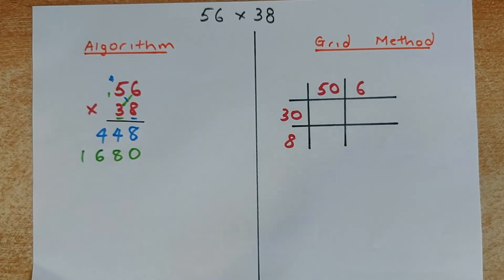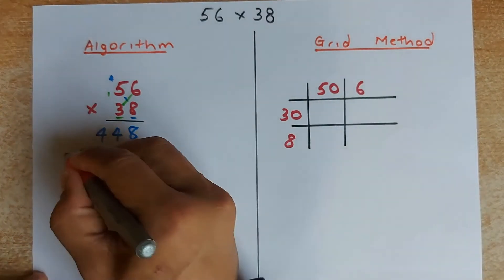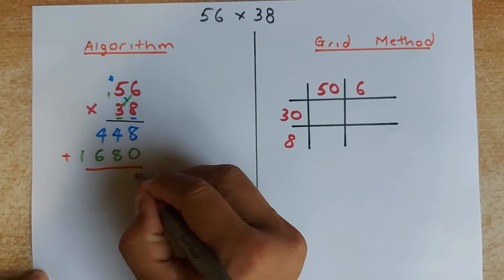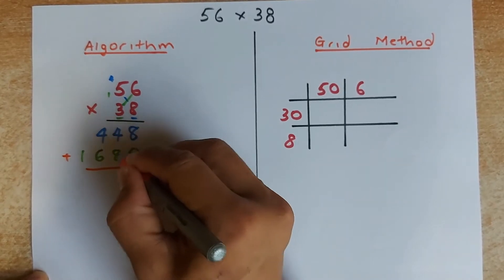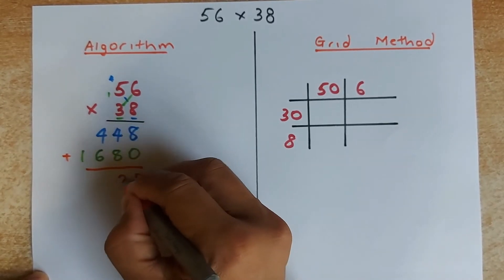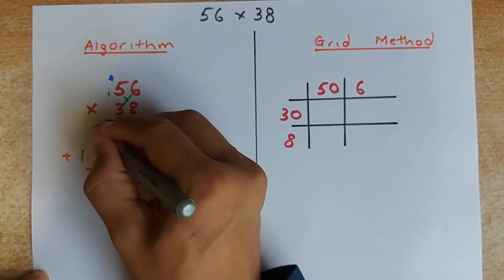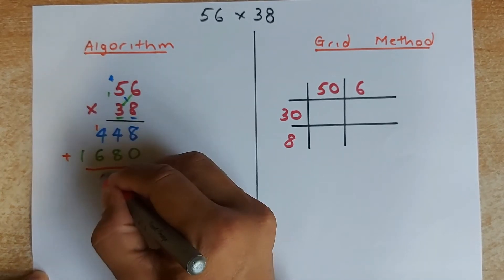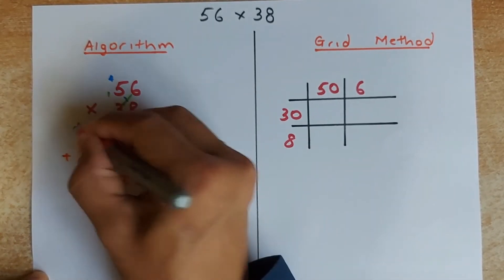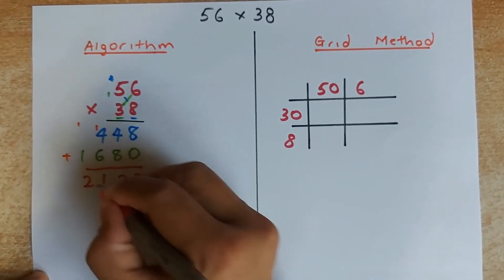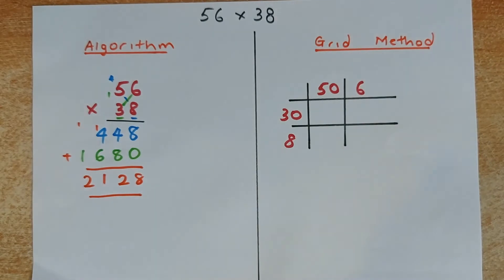Then what's the next step? Of course, you are going to add the 2 numbers together. And then 8 plus 0 is going to be 8. 4 plus 8 is 12 — 2, carry up 1. 4 plus 6 is 10, that's the 1, so 11 — 1, carry up 1. So 1 and 1 is 2. So the answer is 2, 1, 2, 8.